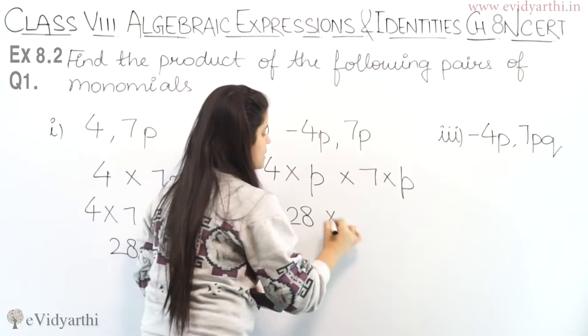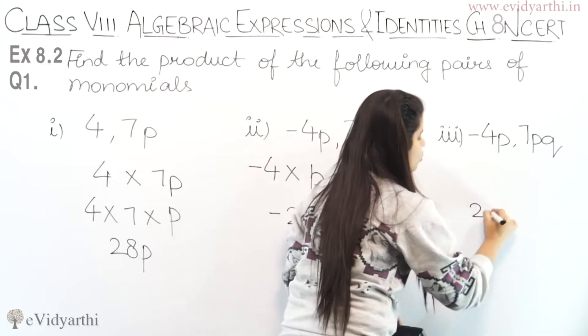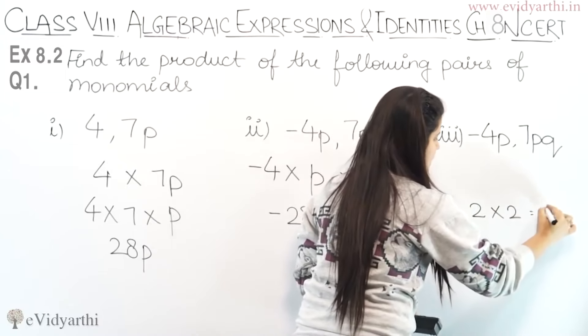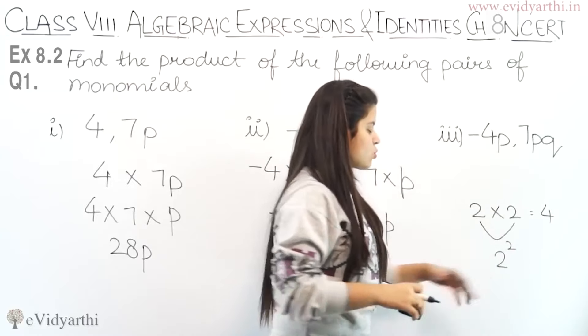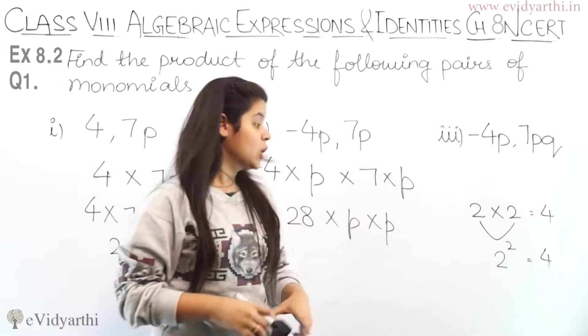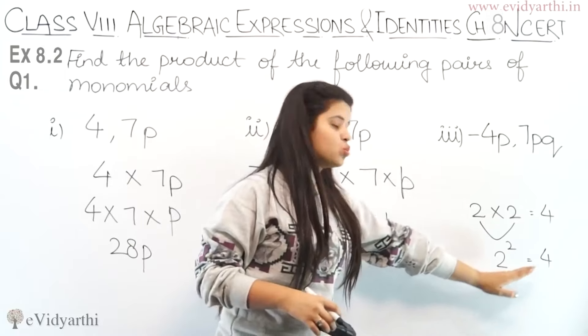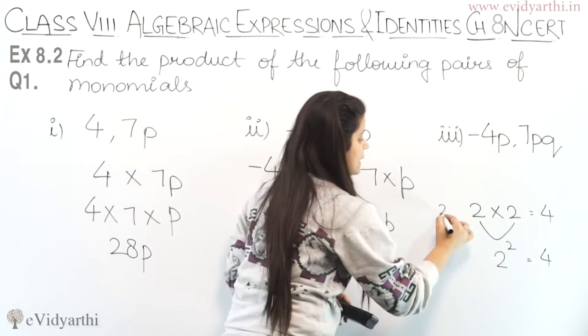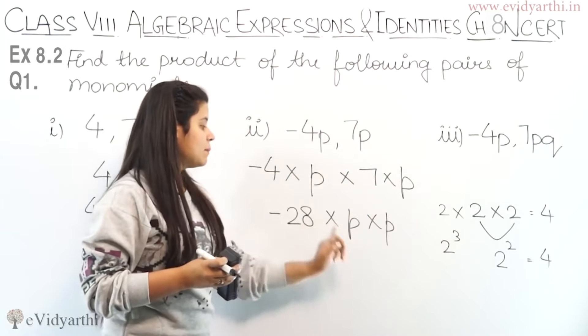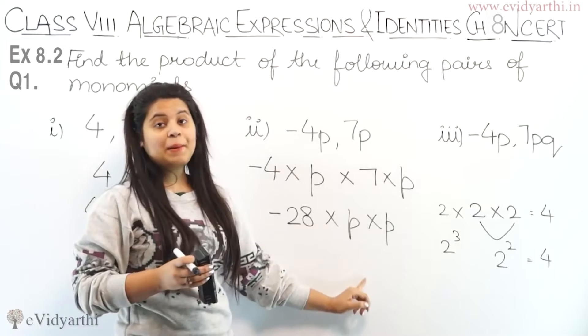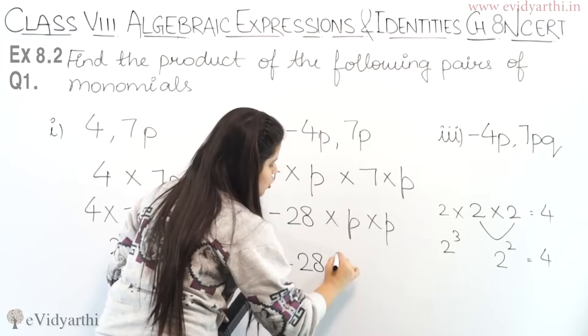Now, here we have the second part. Like if we have 2 into 2, we know that 2 into 2 is 4. We can write 2 square, which is 4 again. So if the number 2 appears 2 times, we can write 2 square. Similarly here, we have P appearing twice, so this will be minus 28P square.